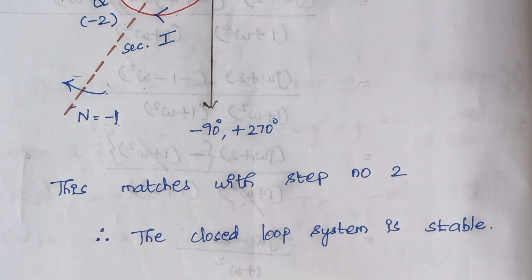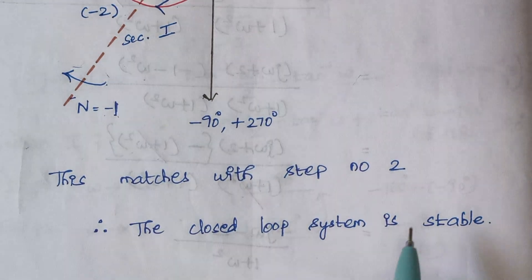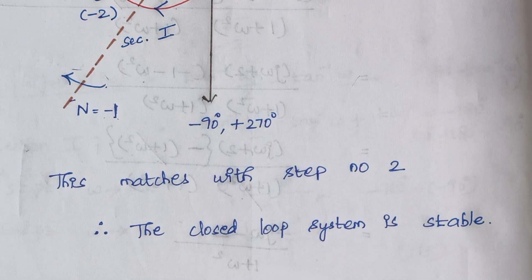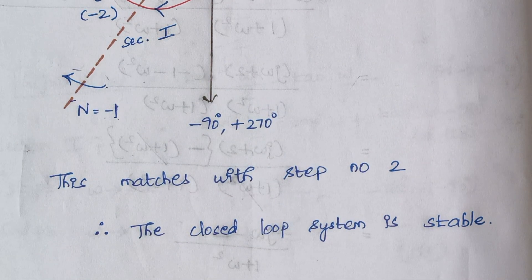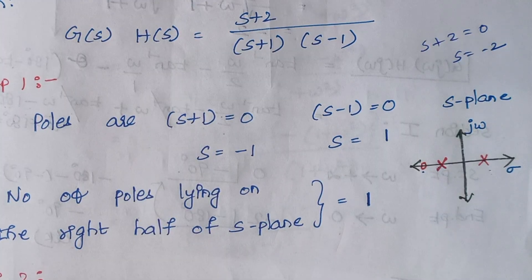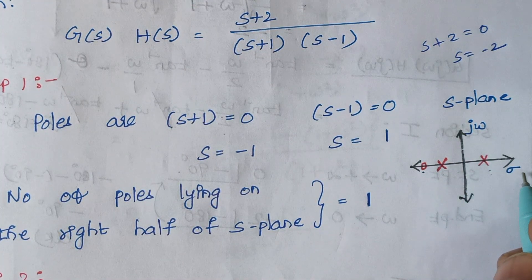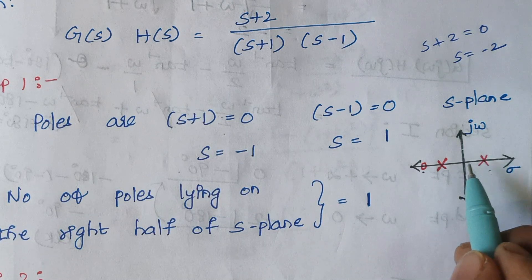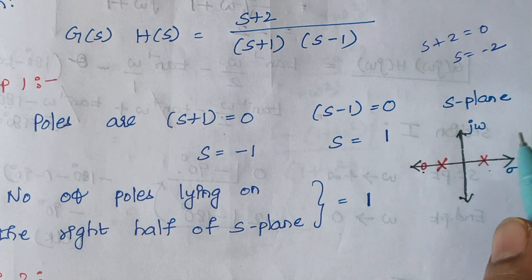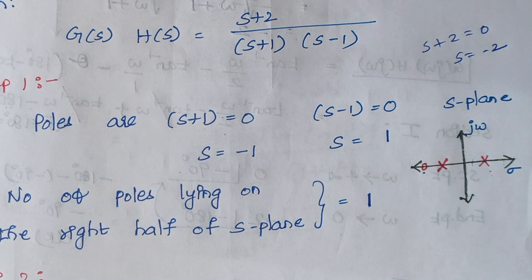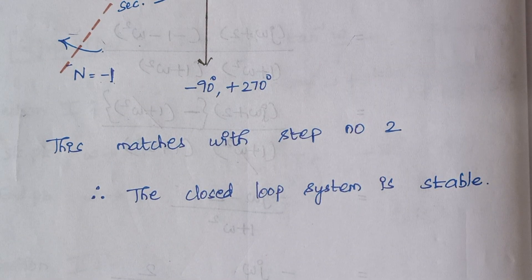We can finally conclude the closed loop system is stable. Now, regarding the open loop system: we are having one pole lying on the right hand side of the s-plane. Whenever there is one or more poles lying on the right hand side, the open loop system is said to be unstable. Here comes the end of the problem — if you have any doubts, let me know in the comment section. Thank you.